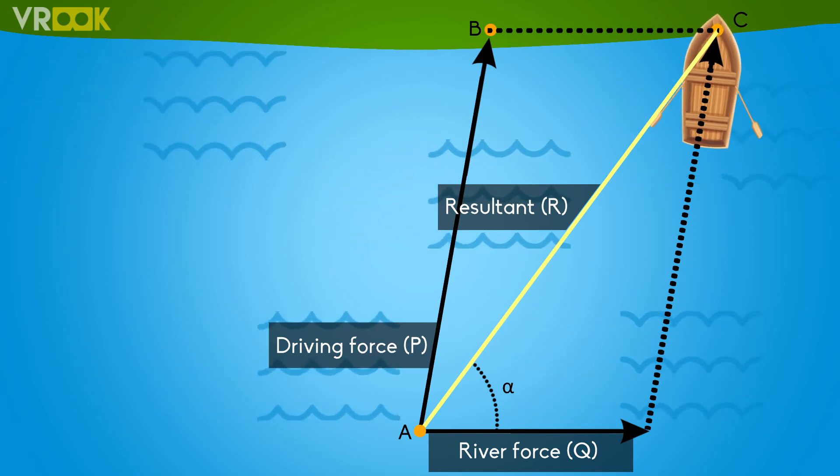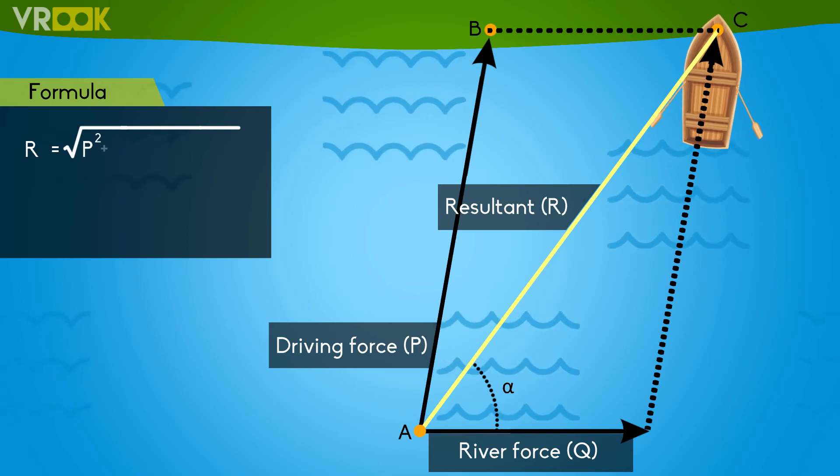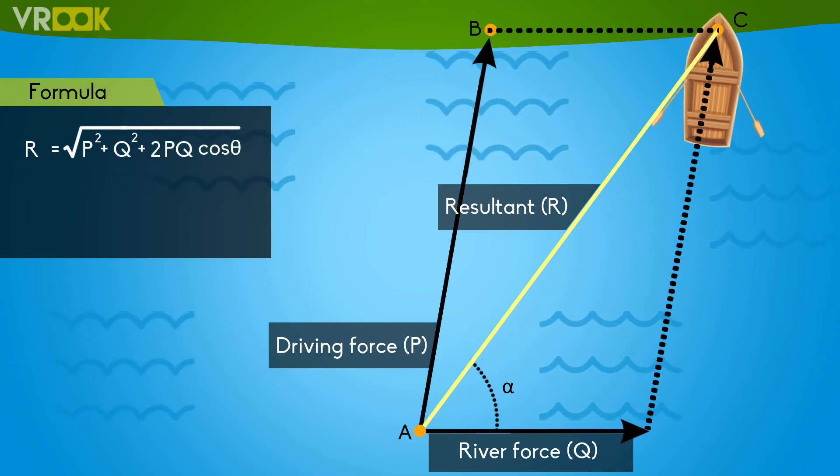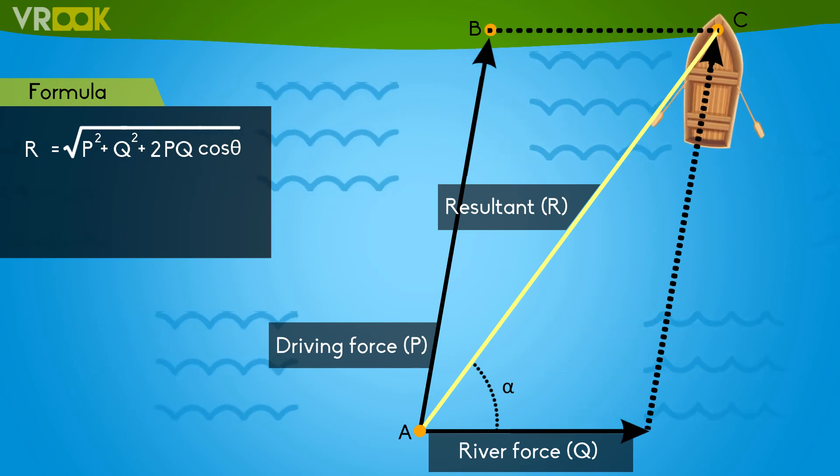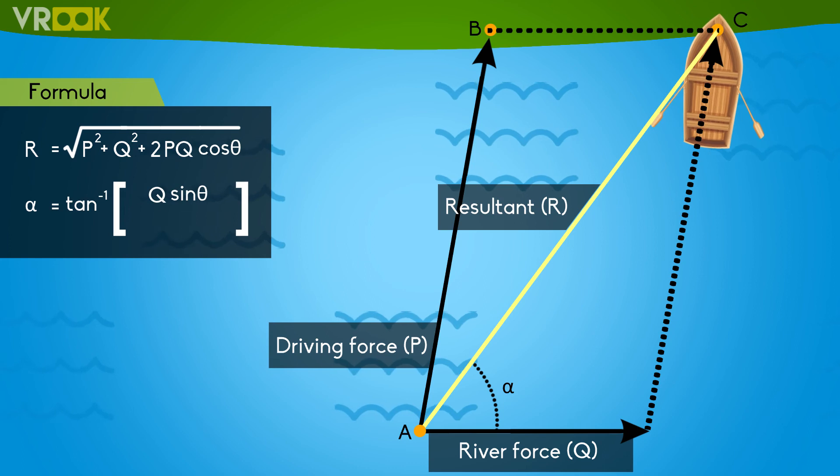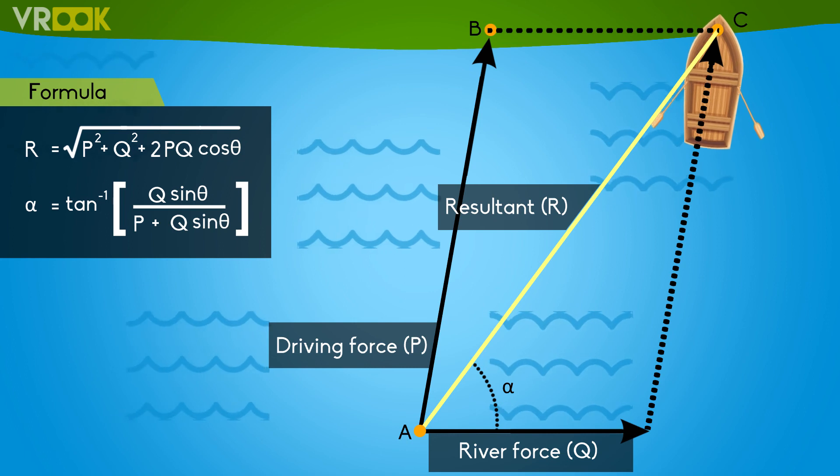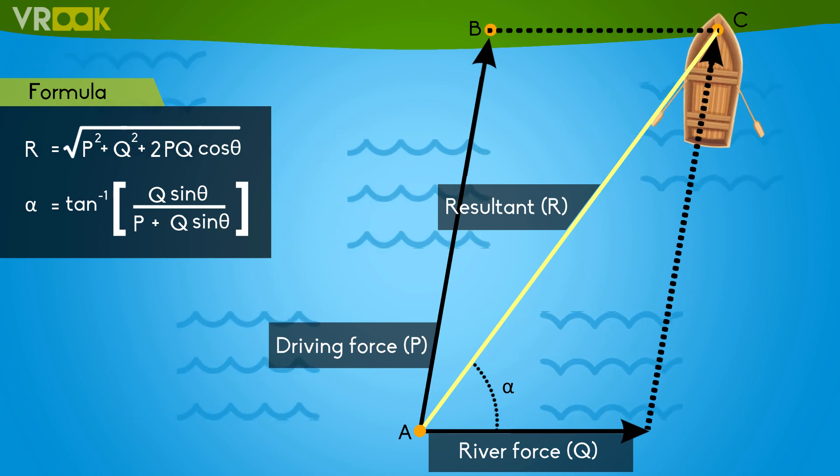The magnitude of this resultant can be found out using a simple formula: R equals square root of P squared plus Q squared plus 2PQ cosine theta, and alpha equals tan inverse of Q sine theta divided by P plus Q sine theta. This is about parallelogram law and it helps us in analyzing and composing forces quickly.